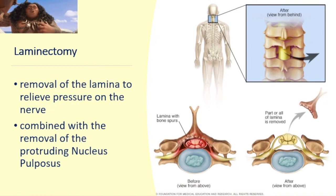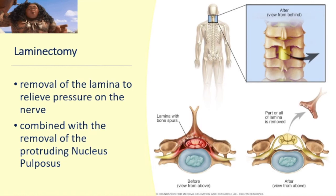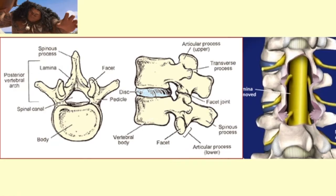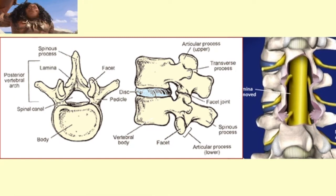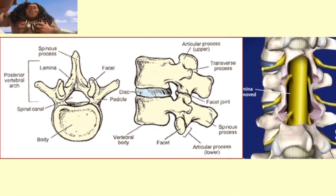The surgical procedure laminectomy involves the removal of the lamina to relieve pressure on the nerve, combined with removal of the protruding nucleus pulposus, which further relieves pressure on the nerve. The image shows the anatomical location of the lamina, which is why the procedure is called laminectomy. The end product of laminectomy is the lamina being removed, relieving pressure to the spinal cord.